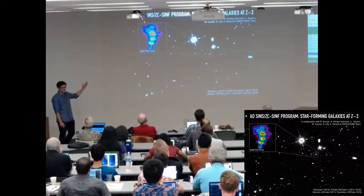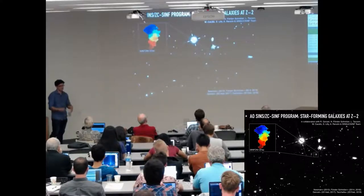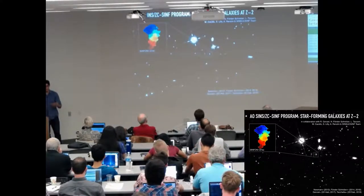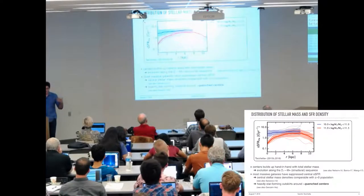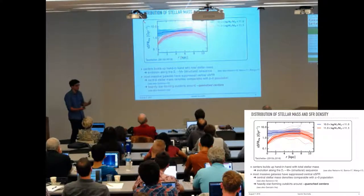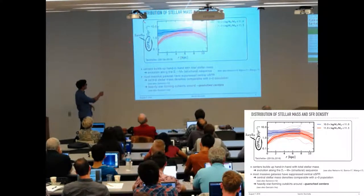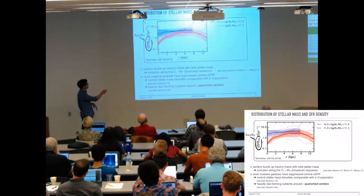We use SINFONI to trace the H-alpha emission line, which is a good star formation rate indicator, as well as the kinematics of these galaxies. What I show here is the specific star formation rate in H-alpha, dust corrected — basically the star formation rate surface density divided by the stellar mass surface density as a function of radius.